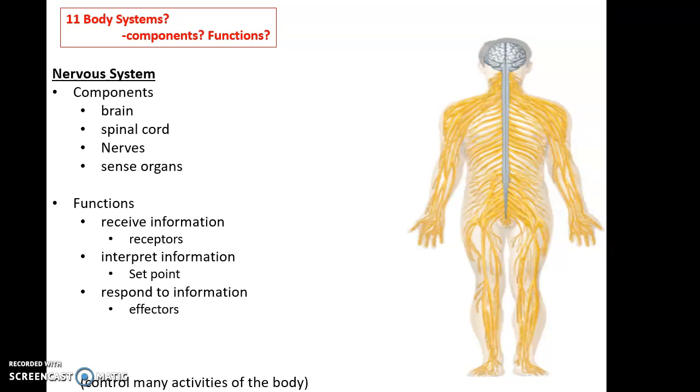Functions of the nervous system include receiving information via receptors, sending that information to the brain and spinal cord via the nerves, interpreting the information, often involving comparing that information to a set point, and then responding to the information, sending commands via the nerves to the effectors to cause a response. And therefore, the nervous system is involved in controlling many activities of the body.